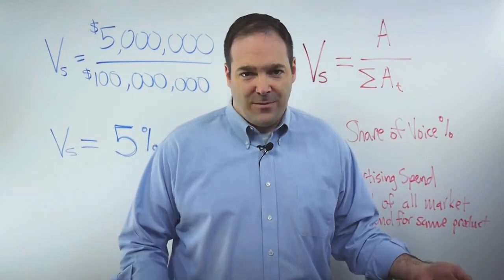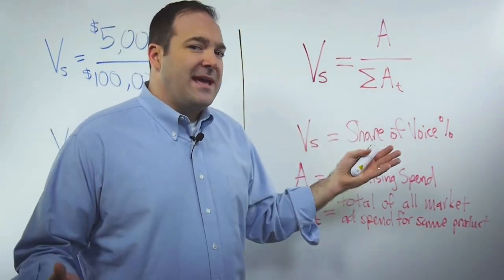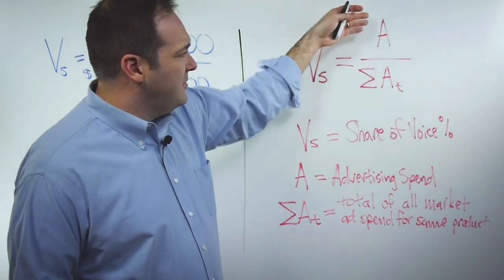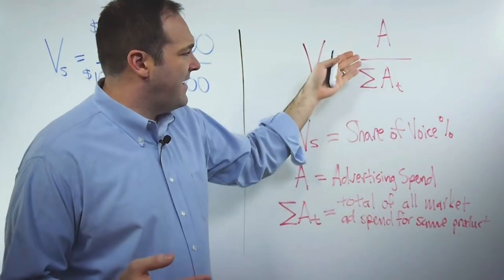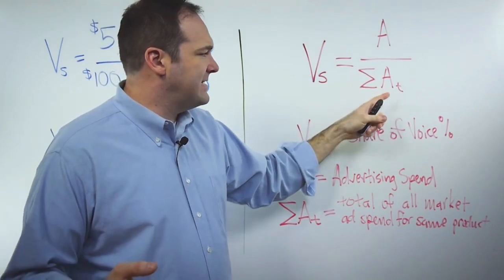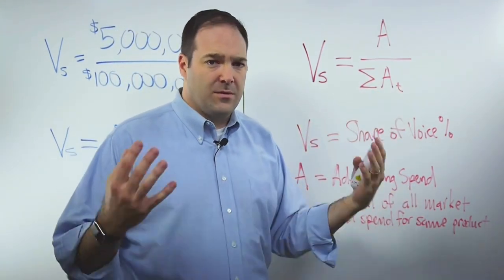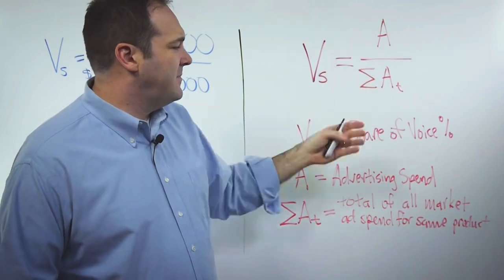So let's take a look at what that equation looks like. Your share of voice is going to end up being a percentage and you get to that percentage by taking your advertising spend and dividing it by the sum of all advertising spends within your category or product set within that same period of time.